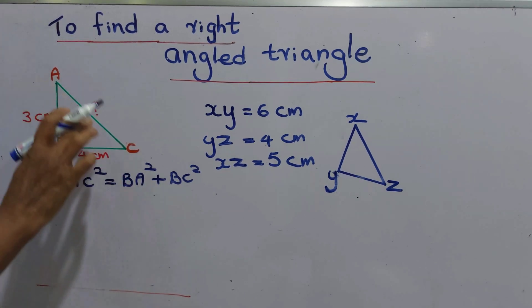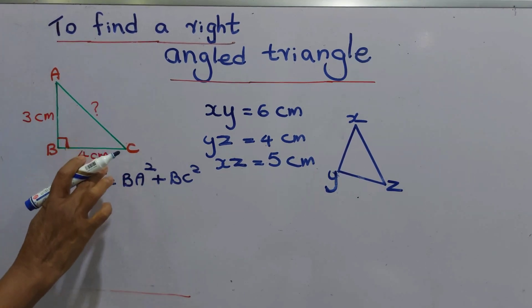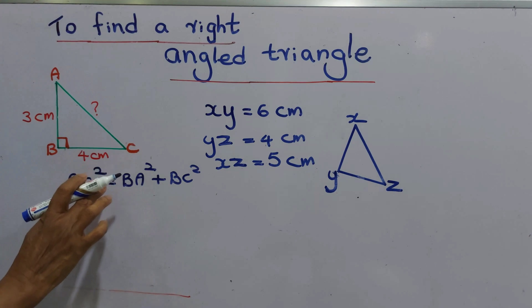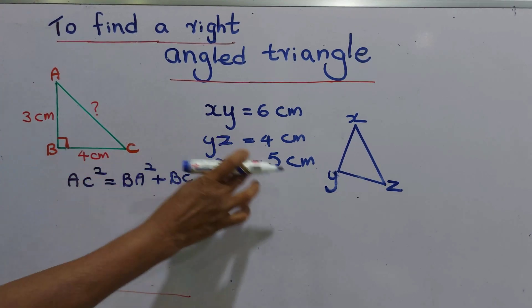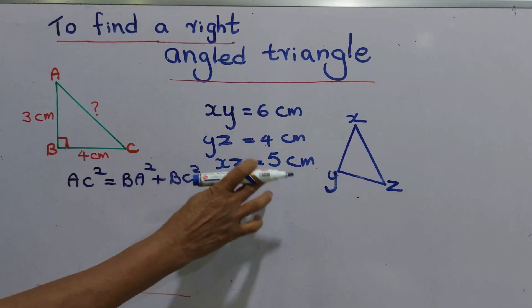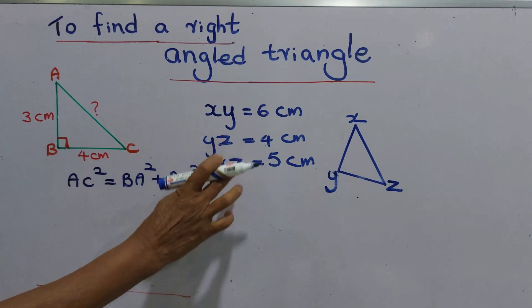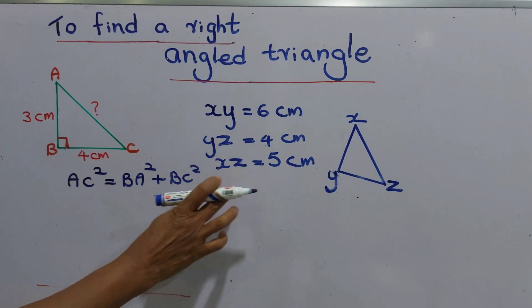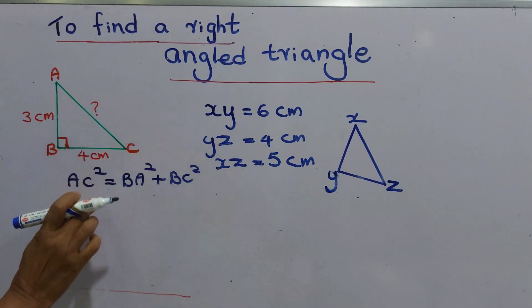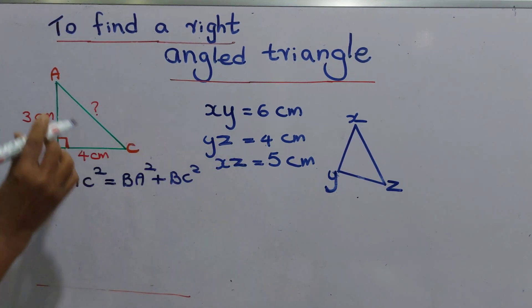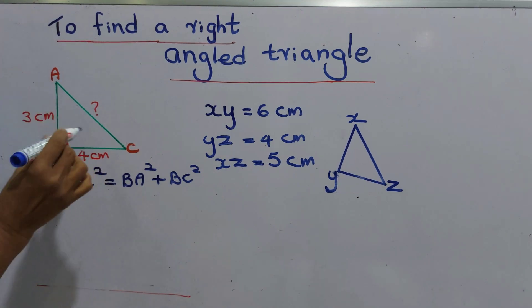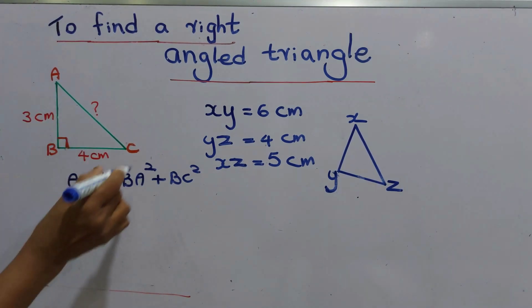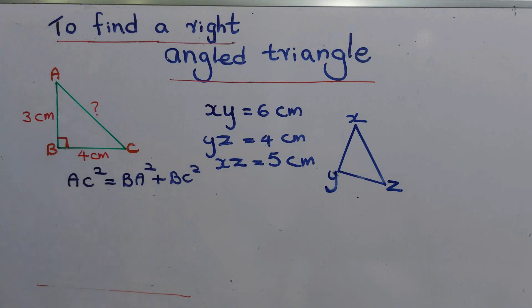The Pythagoras relationship is used to find whether a given triangle is a right angle triangle, and also to find an unknown side of a right angle triangle. There are two ways.